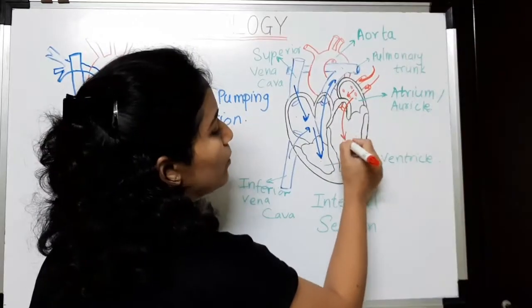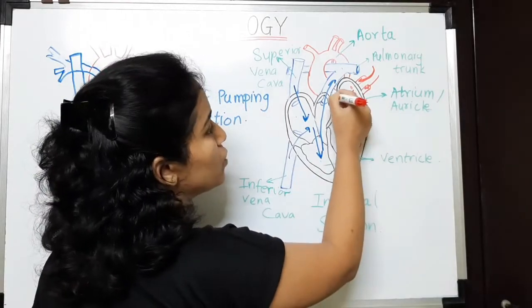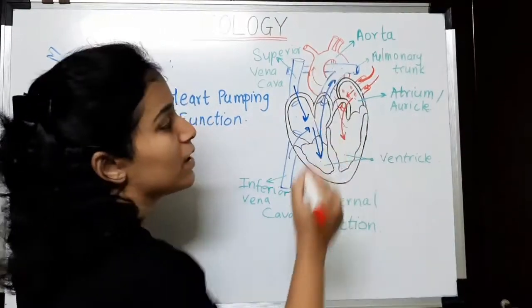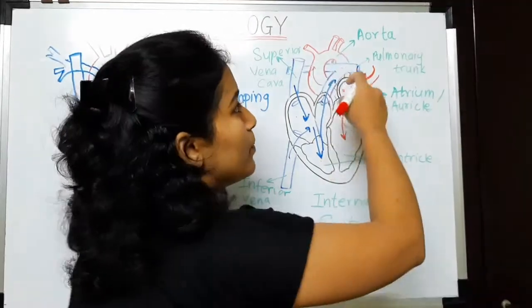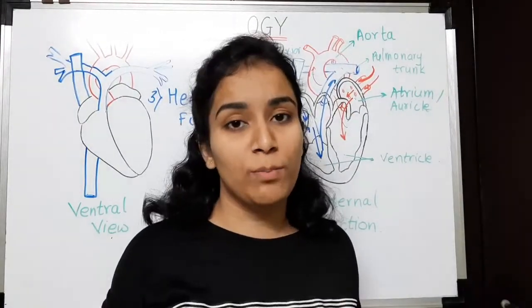Then, again, from left ventricle, the blood is pumped into systematic aorta. From here, the blood is pumped into all over the body parts.